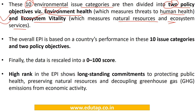Ecosystem vitality has around 60% weightage in the calculation of the overall Environmental Performance Index, covering seven issue categories: biodiversity and habitat, forest, fisheries, climate and energy, air pollution, water resources, and agriculture.